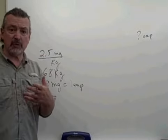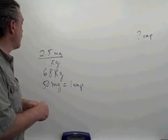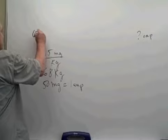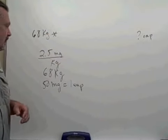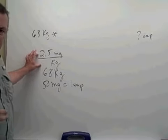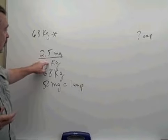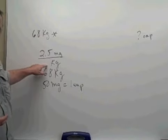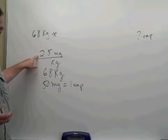So typically what we want to start with in problems like this is the patient's weight. We're told that the patient weighs 68 kilograms. Now we can factor in the rate of administration of the drug. For every one kilogram of this patient's weight, they should receive 2.5 milligrams of the drug.